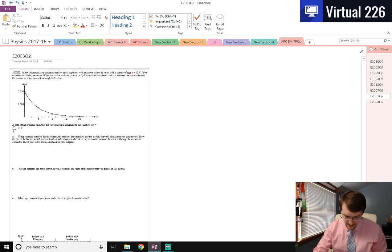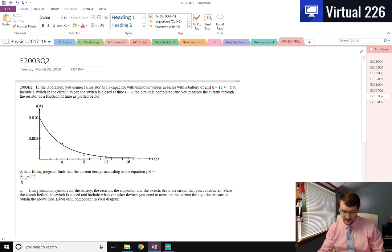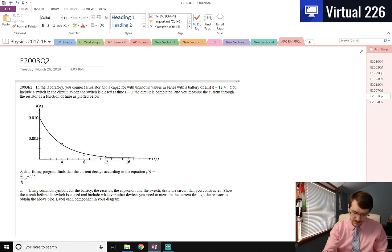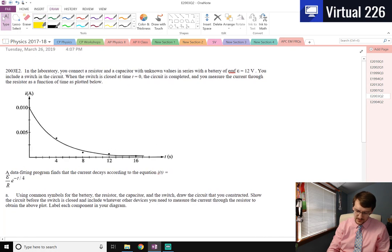What we're going to be looking at here is the AP Physics C Electricity and Magnetism test from 2003, specifically question number two. In this question, we are going to be looking at RC circuits, so that's a resistor and a capacitor. Let's just kind of dive into this one, see where we go.